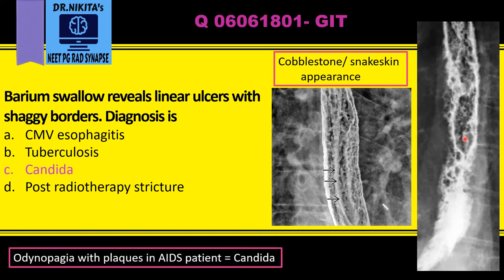In a patient with AIDS presenting with odynophagia and plaques, it is highly likely that the diagnosis is candida esophagitis. Remember: cobblestone or snakeskin appearance with shaggy esophagus is candida esophagitis.